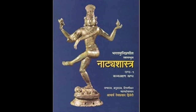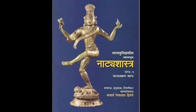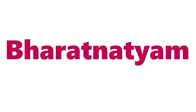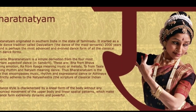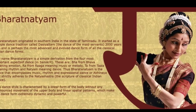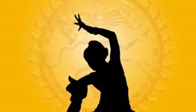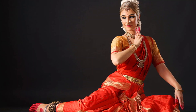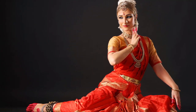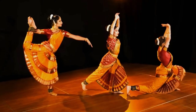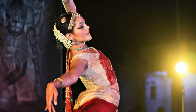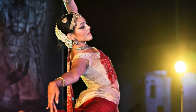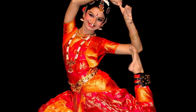Presently, the Sangeet Natak Academy recognizes 8 classical dance forms in India. Bharatanatyam is the oldest among all classical dance forms. It derives its name from Bharata Muni and Natyam, which means dance in Tamil. However, other scholars have ascribed the name Bharata to Bhava, Raag, and Tal. The origins of this dance form can be traced back to Saadir, the solo dance performance of the temple dancers or Devadasis in Tamil Nadu, and hence it was also referred to as Dashiattam.